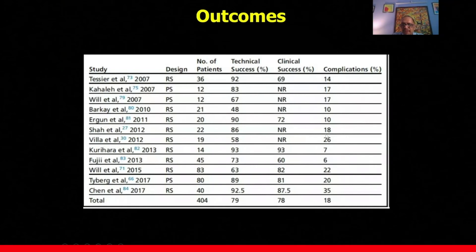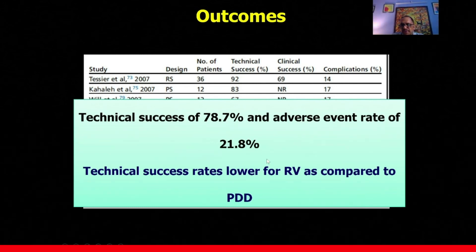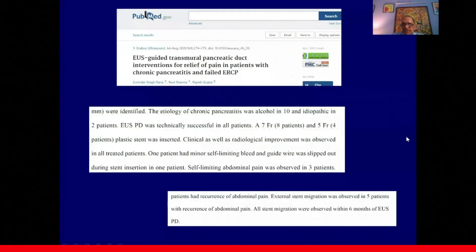Studies show varying technical success rates, with a pooled technical success rate of about 80% and adverse event rates of approximately 22% — which is quite high for a minimally invasive procedure. Technical success rates for rendezvous procedures are lower than for direct pancreatic duct drainage, due to the risk of guide wire slippage during exchange of the echoendoscope. Our published experience of EUS-guided transmural pancreatic duct drainage in 12 patients showed technical success in all, minor complications in three, but stent migration in nearly five patients within three months — highlighting the need for dedicated stents.